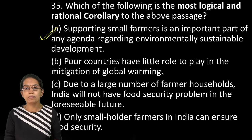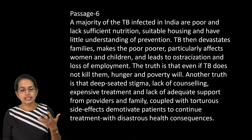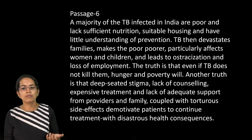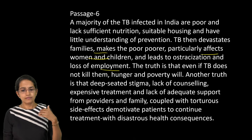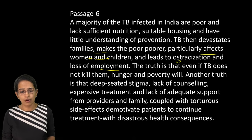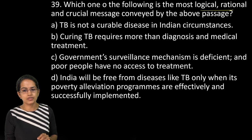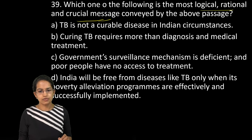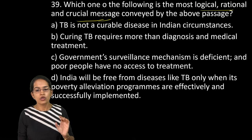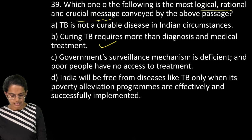What is implied in the passage: there is potential for food insecurity, and India will have to strengthen disaster management capabilities, as clear from the last statement about frequent floods, disasters, and acute weather events. For the passage on TB patients: TB affects not just the person but also the family, women, children; it leads to job loss, unemployment, and social problems. Deep-seated stigma and lack of counselling are associated problems. The most logical inference is that curing TB requires more than diagnosis and medical treatment — Option B is correct.